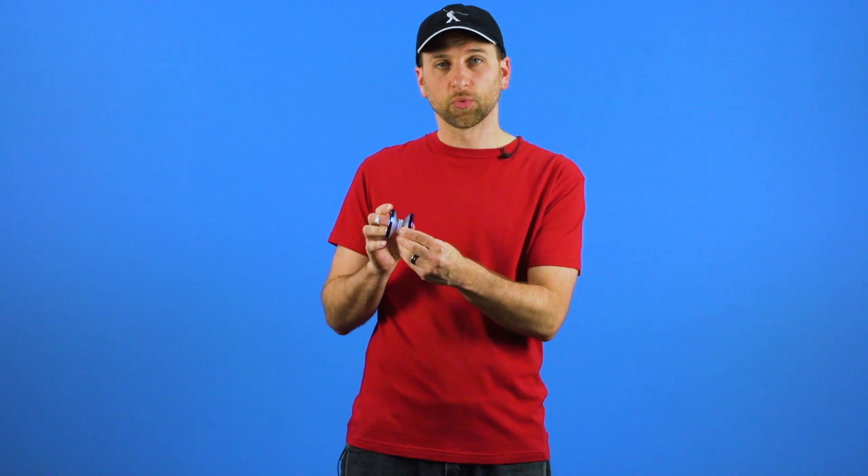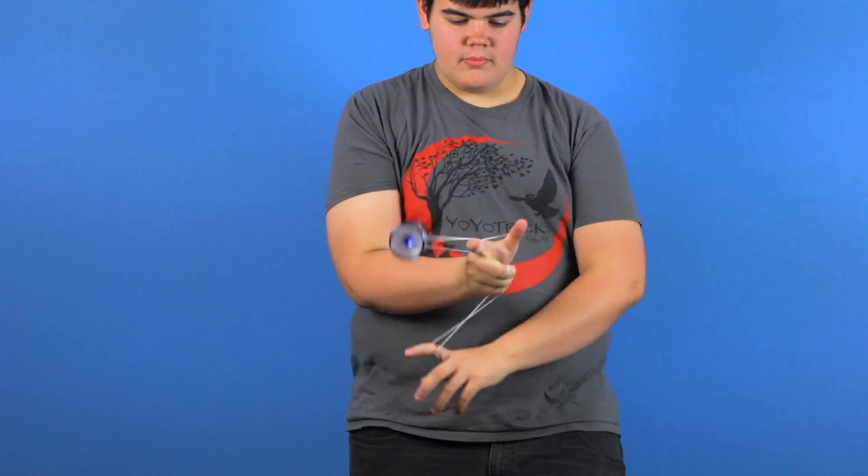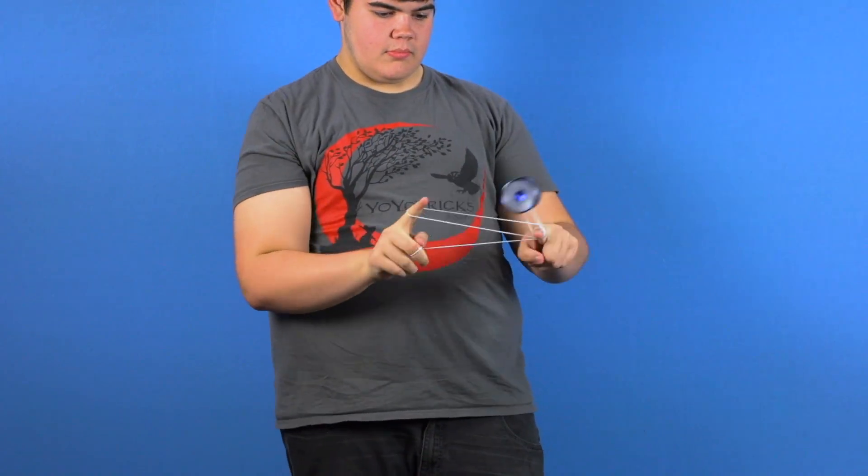Since the Iceberg is such an unusual yoyo, it's going to have some unusual characteristics. The first thing that you'll probably notice about it is that it does play on the lighter side. It's just under 66 grams, which I guess is on the more normal side of light, which means it's really easy to move around and manipulate during your tricks.